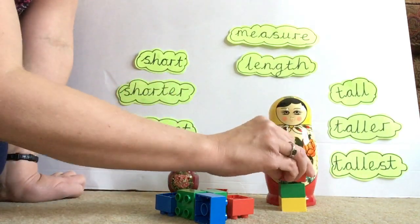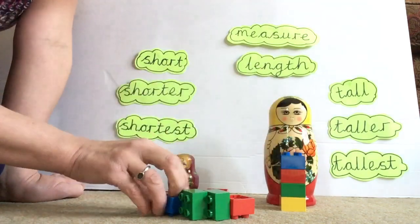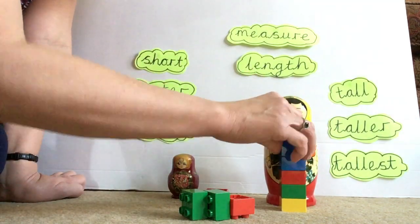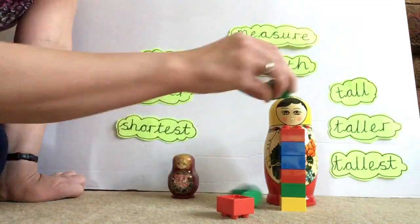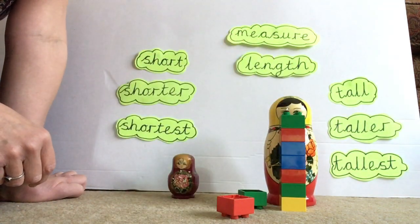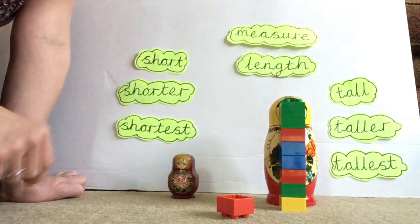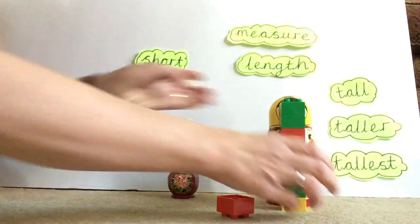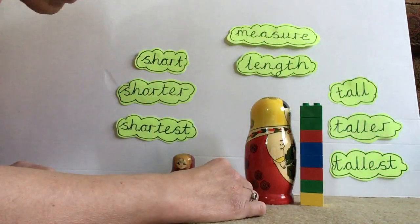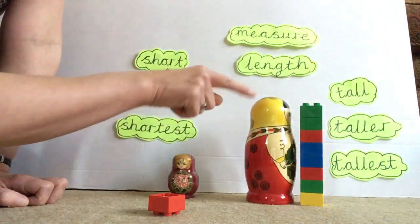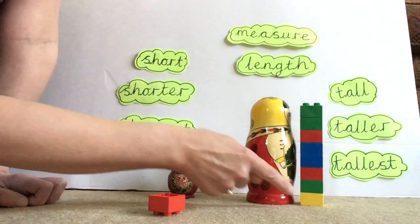And I start off building a tower that's going to be the same size as the tall Russian doll. Two, three, four, five, six, seven. Is that tall enough? Maybe I need one more. Eight. And if I look at them sideways, they're just about the same height now. So we can count the bricks to find out how many bricks high this Russian doll is.